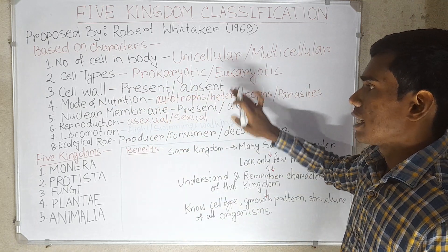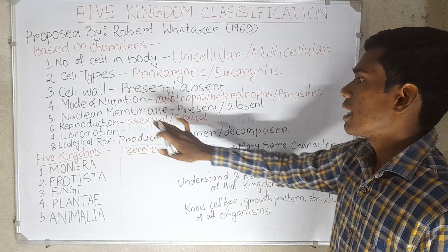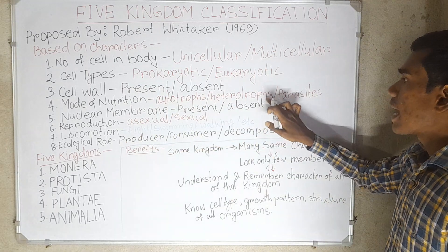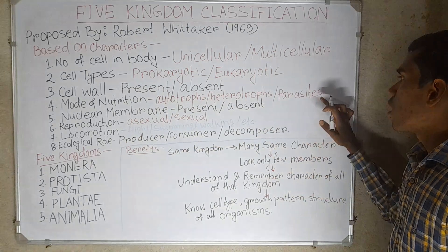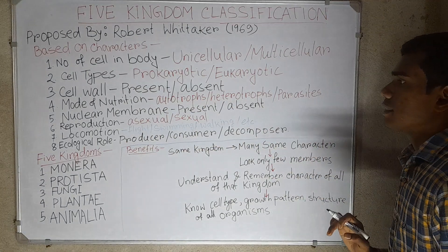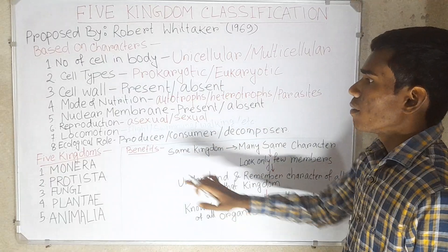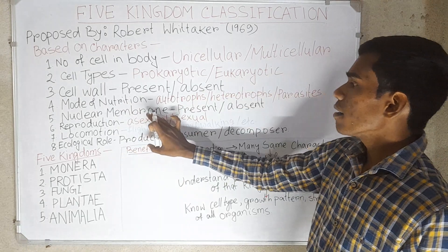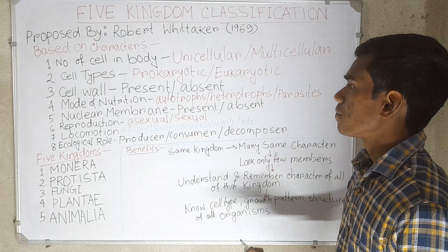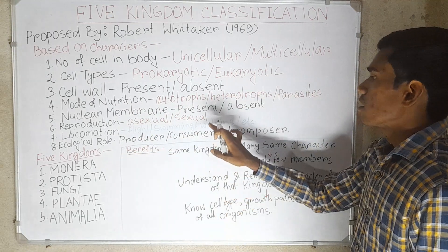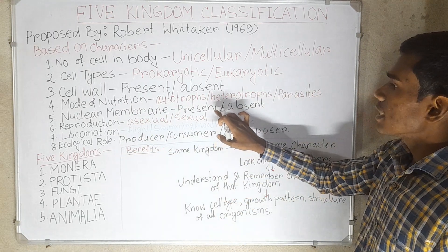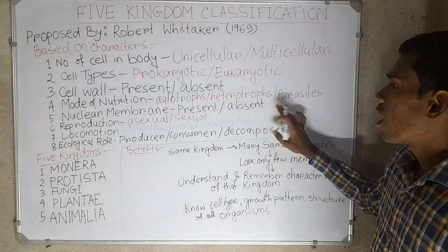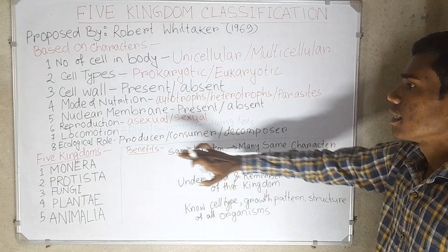Mode of nutrition is also considered — that is, whether the organism is an autotroph, heterotroph, or parasite. Additionally, the presence of a nuclear membrane is considered — whether the nuclear membrane is present or absent.